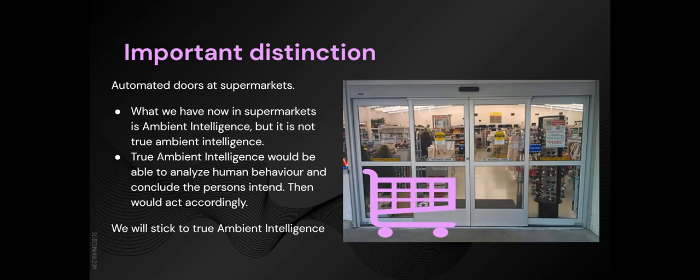That is the important distinction between true ambient intelligence and not-true ambient intelligence. We don't have true ambient intelligence just yet, because most devices such as lights turning on don't really analyze your behavior and predict your intention. All they do is use sensors — as long as something, it doesn't even have to be human, touches those sensors, they turn on the lights or open the door. We can still consider them ambient intelligence because there is no manual input, but for this presentation we will stick to the true definition where the system has to analyze human behavior and predict an intention.